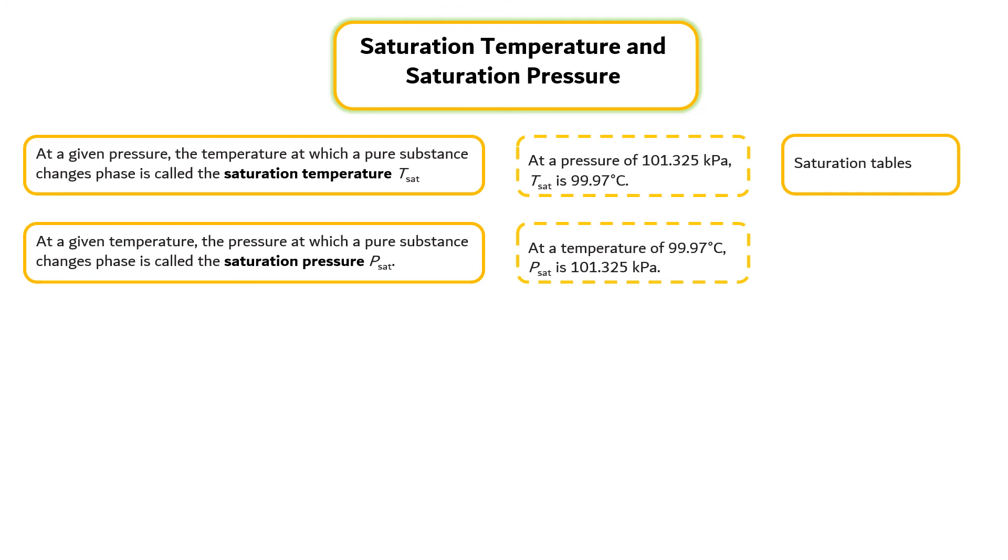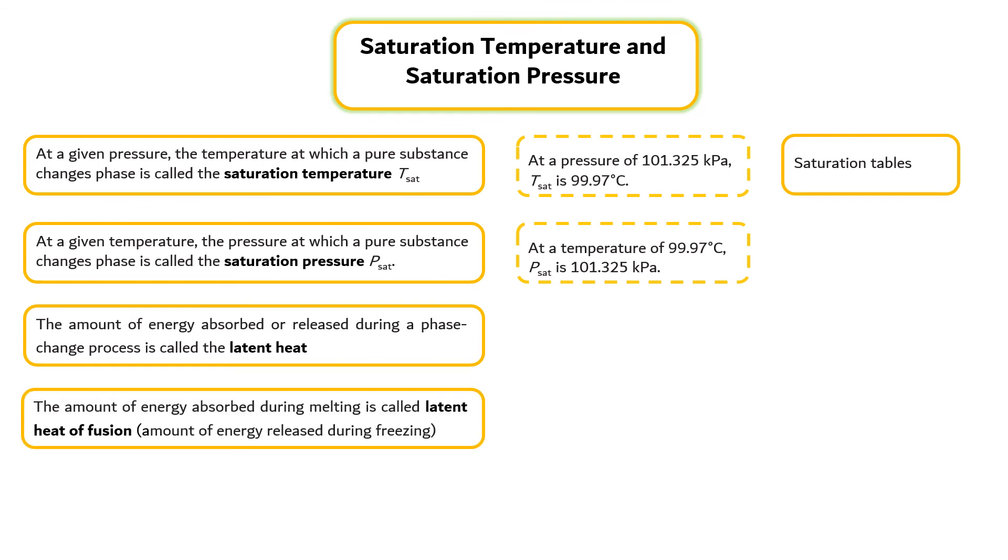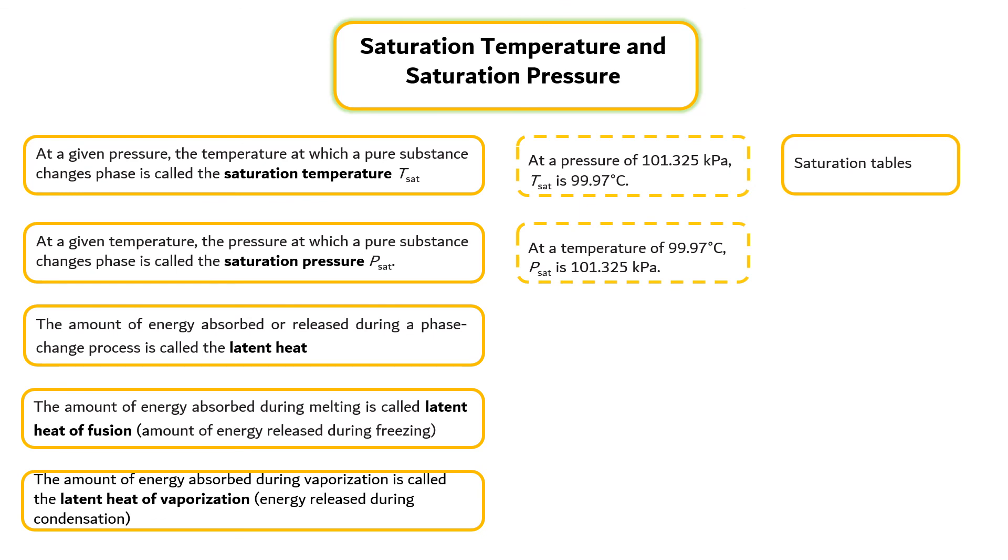The amount of energy absorbed or released during a phase change process is called the latent heat. The amount of energy absorbed during melting is called the latent heat of fusion or amount of energy released during freezing. The amount of energy absorbed during vaporization is called the latent heat of vaporization or energy released during condensation.